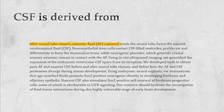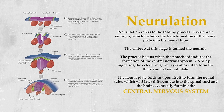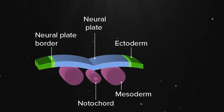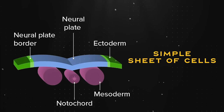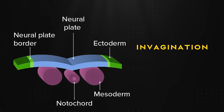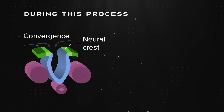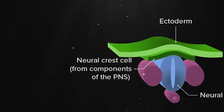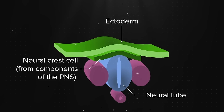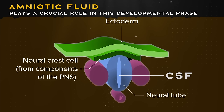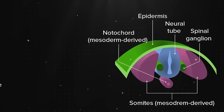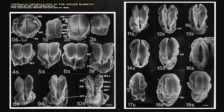Where does the cerebrospinal fluid originate? Interestingly, it is derived from amniotic fluid through a process known as neurulation. Initially, in the embryonic stage, we start as a simple sheet of cells. Within this sheet, there is a specific area called the neural plate — a group of cells that undergo invagination and neurulation. During this process, the neural plate folds inward, creating neural grooves and neural folds, which eventually merge together. Surrounding the neural plate is the amniotic fluid, which plays a crucial role in this developmental phase. As the neural plate undergoes invagination, the central area transforms — what was once part of the external amniotic fluid gradually becomes what we know as cerebrospinal fluid.